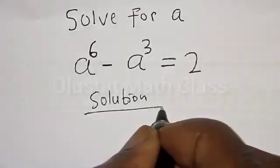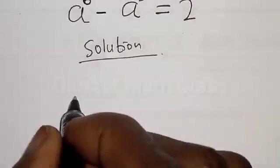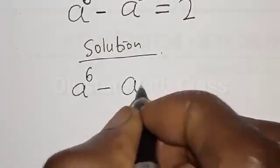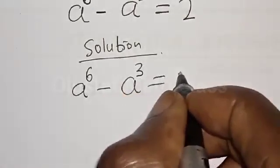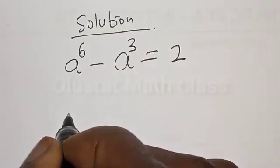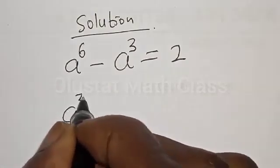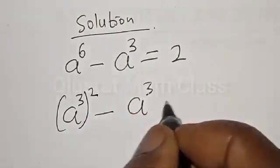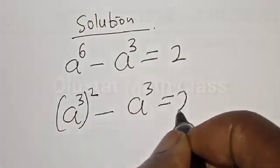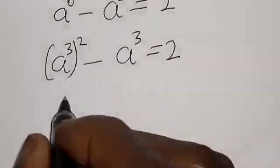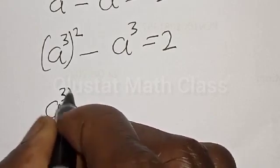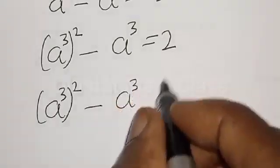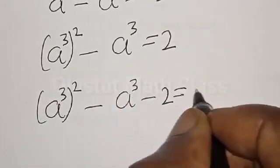Solution. We have the given equation A raised to power 6 minus A raised to power 3 is equal to 2. A raised to power 6 can be expressed as A raised to power 3, all squared, minus A raised to power 3 is equal to 2. Then we have A raised to power 3 all squared minus A raised to power 3 minus 2 is equal to 0.